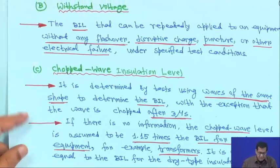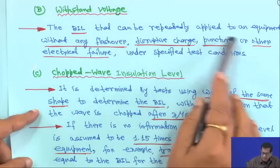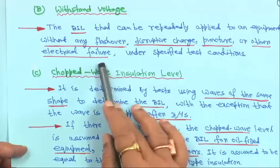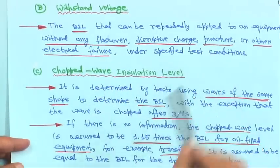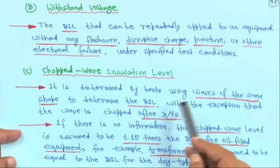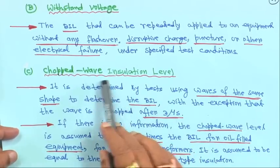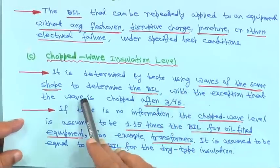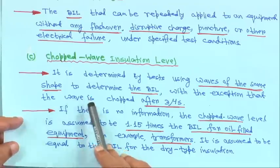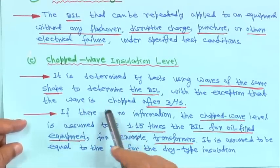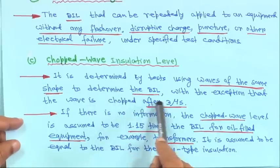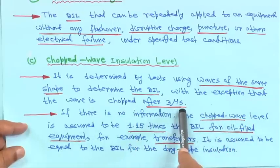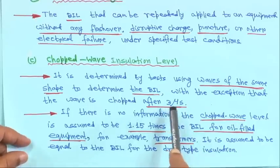The withstand voltage is the BIL that can be repeatedly applied to equipment without any flashover, disruptive charge, puncture, or other electrical failure under specified test conditions. The chopped wave insulation level is determined using the same 1.2×50 microsecond wave shape, with the exception that the wave is chopped after 3 microseconds.